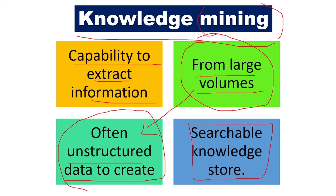For example, if I bring all textbooks from 1st standard to 10th standard and dump them in a room, and ask you to search for the 3rd standard textbook, it will be very difficult. This is unstructured. Everything is in one place. What knowledge mining does is it extracts the information and structures it so that whenever you want something, you can get it easily.